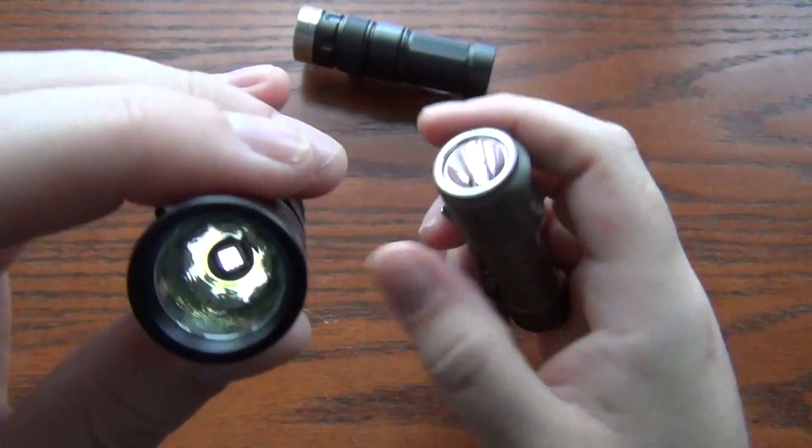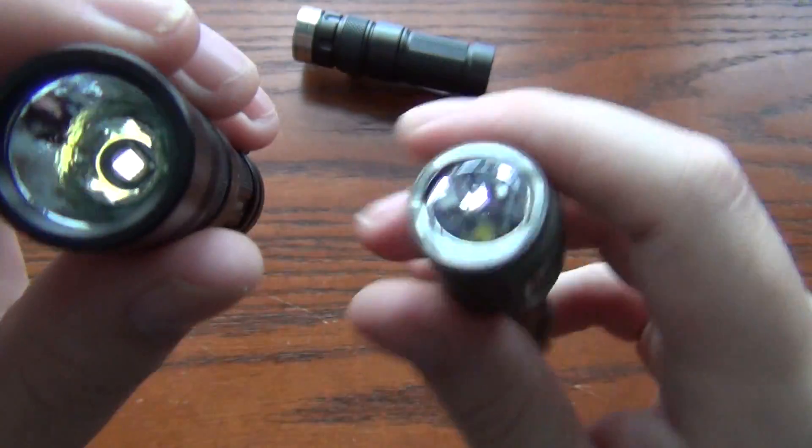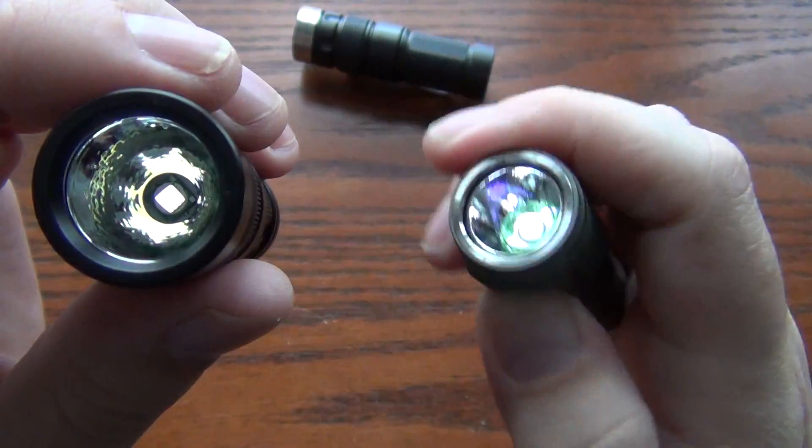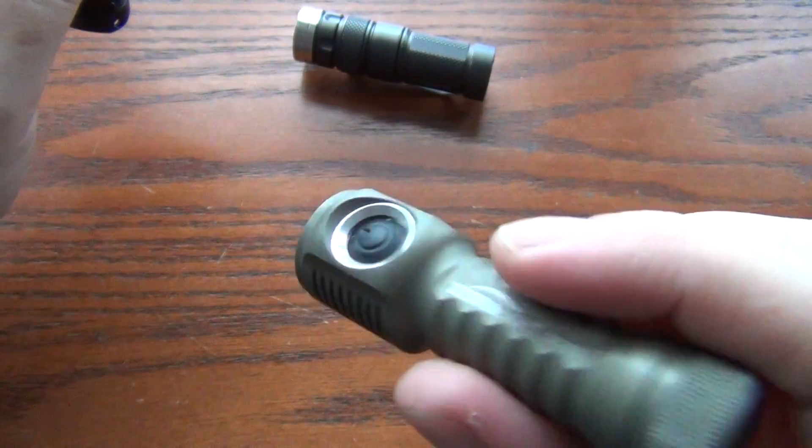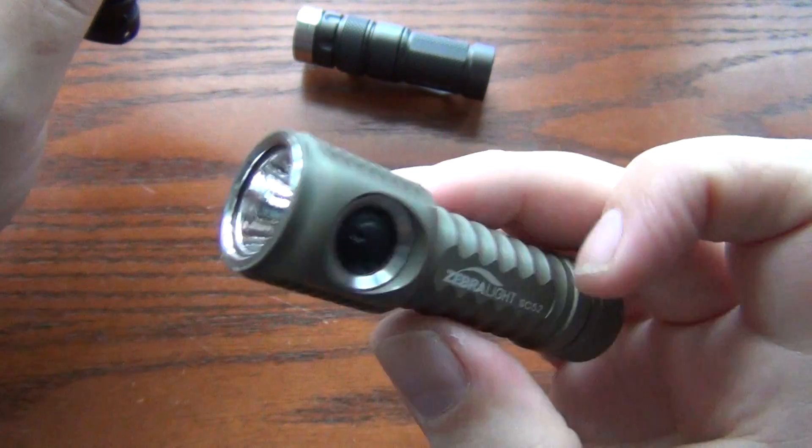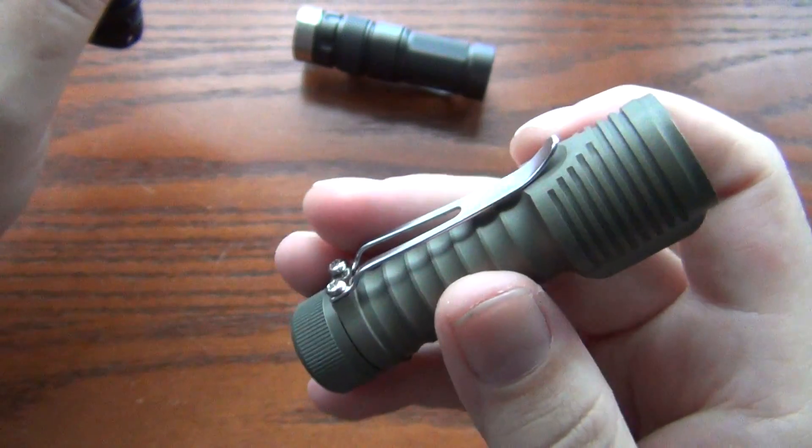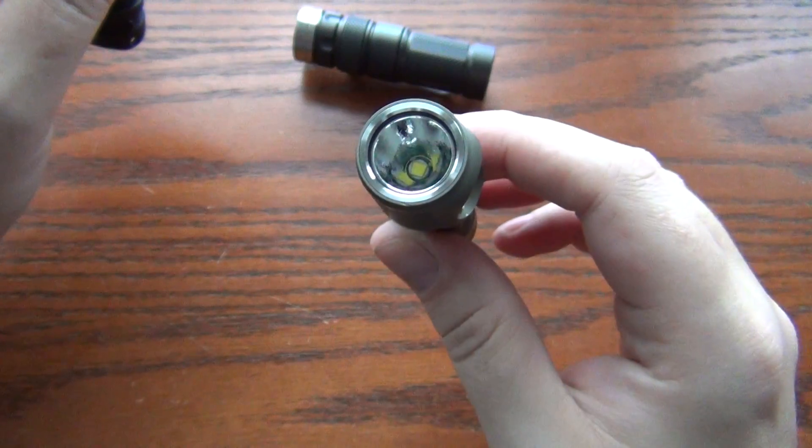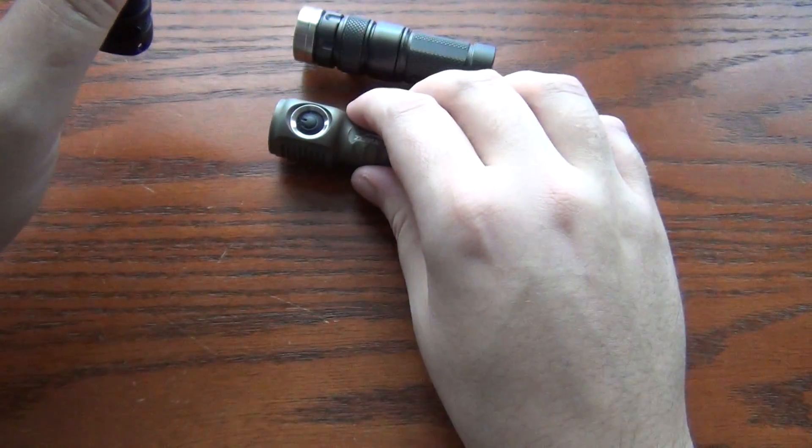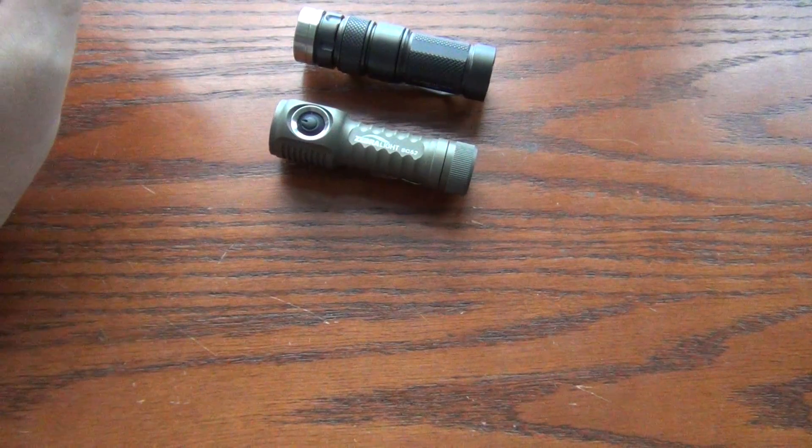This one's got an orange peel reflector too. But it still doesn't compare to this Zebralight. The gentleman, his name is George, who designs these Zebralights, is an amazing engineer I guess you would call him. There's no artifacts in this beam. No rings at all. Zebralights always have excellent beam pattern.